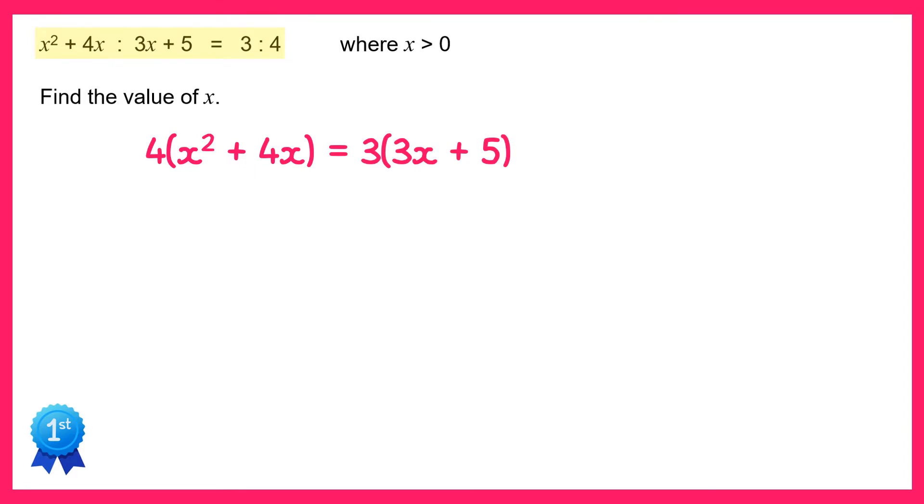Now why can I write this down? Well, x squared plus 4x represents three parts of the ratio, and if I take four of those I've got 12 parts because 4 times 3 equals 12. So the left hand side here is representing 12 parts.